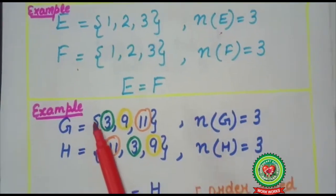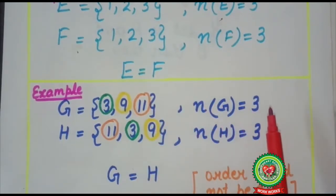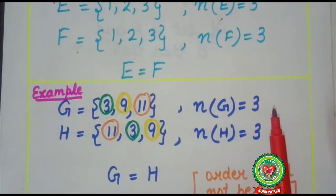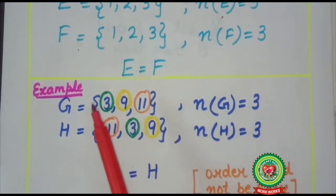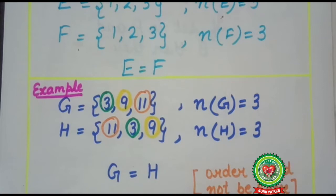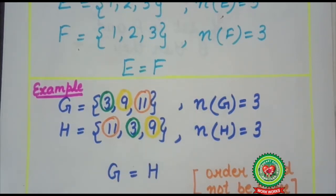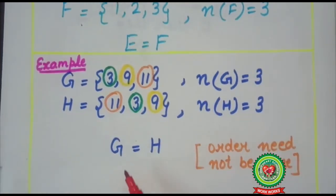Let's consider two more sets. Here G is {3, 9, 11} and the cardinal number of G is 3. Set H is {11, 3, 9} and the cardinal number of H is also 3. We observe that 3, 9, 11 are present in both sets and they have the same cardinal number, but they are not in the same order. So as long as the elements of the set are the same, order doesn't matter. This implies that G is equal to set H.